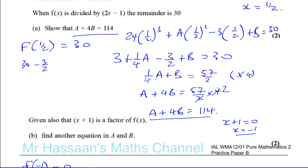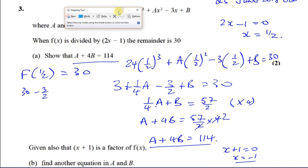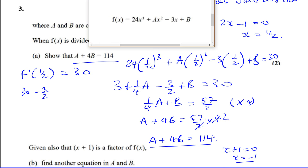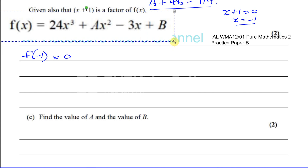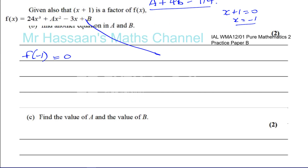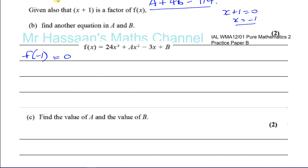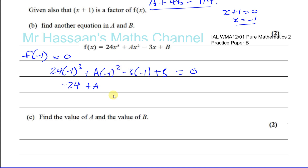Substituting x = −1 into f(x): 24(−1)³ + a(−1)² − 3(−1) + b = 0. That gives −24 + a + 3 + b = 0. So a + b = 24 − 3 = 21. Therefore a + b = 21, and that's our second equation.